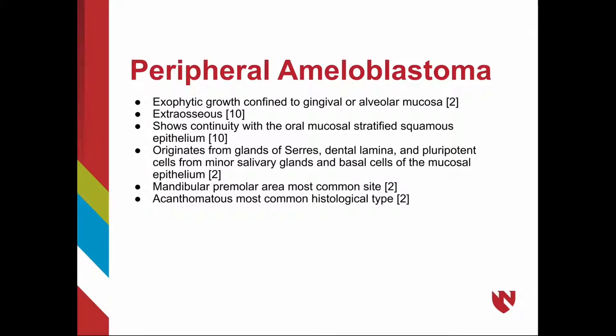Peripheral ameloblastoma is an exophytic growth confined to the gingiva or alveolar mucosa. It is extra-osseous and shows continuity with the oral mucosal stratified squamous epithelium. It originates from the glands of Serres, dental lamina, pluripotent cells from minor salivary glands, and basal cells of the mucosal epithelium. It is most commonly found in the mandibular premolar area, and acanthomatous is the most common histological type.